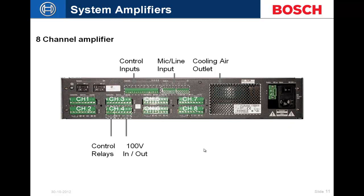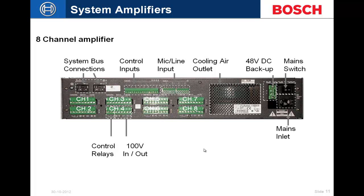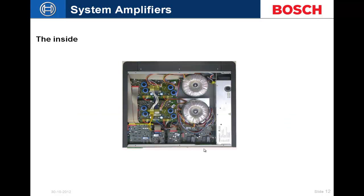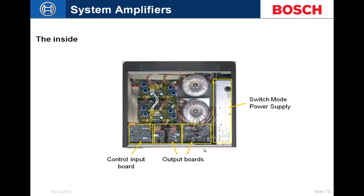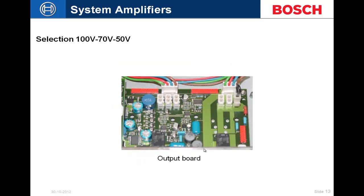The eight-channel amplifier rear has four line or mic inputs, 48-volt DC backup power, mains power, and two system bus connectors. Inside, there is a control board, power supply, output boards, output transformers, and class D power amplifiers. A jumper on the inside switches the output between 50, 70, and 100 volts.